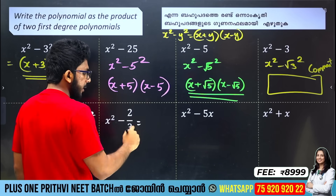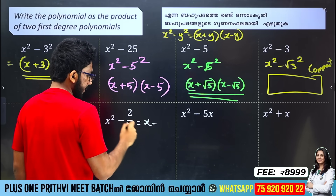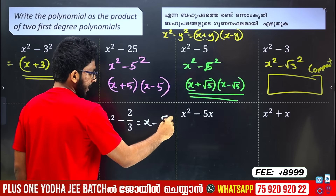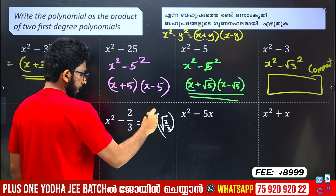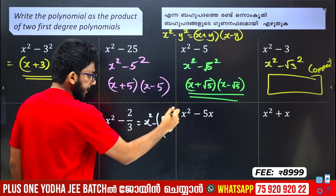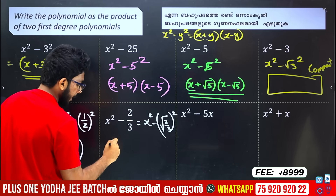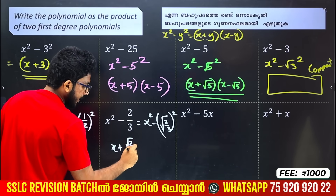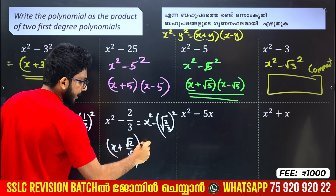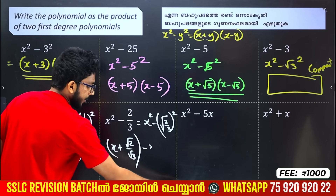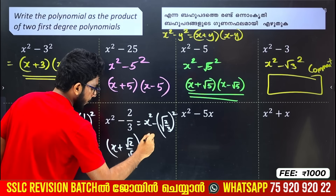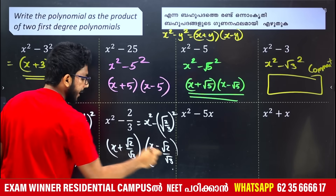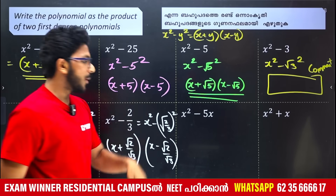We can use the square root here. x² minus 2/3 — take the root of 2/3. Then x² minus (√(2/3))² equals x plus √(2/3) into x minus √(2/3). Root 2 by 3 is the value used in both factors.